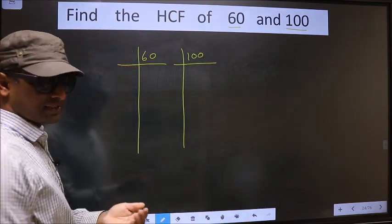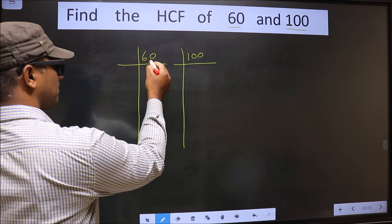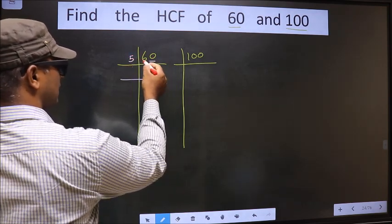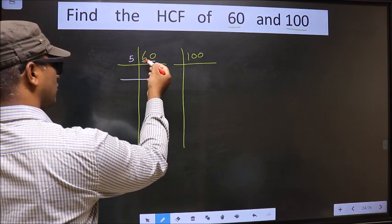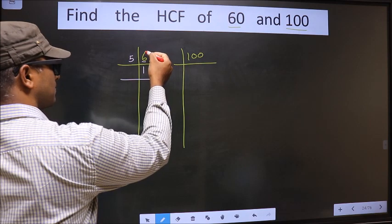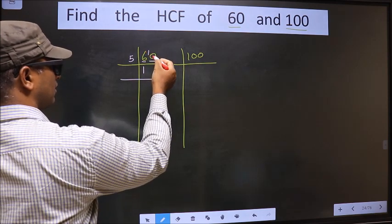For this number, the last digit is 0, so we take 5 here. The first number is 6. A number close to 6 in 5 table is 5 once 5. 6 minus 5, 1, 1 carried forward making it 10.